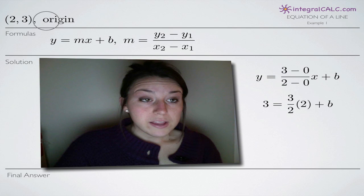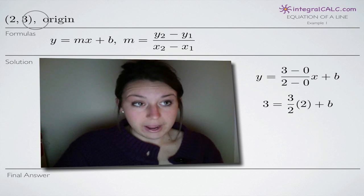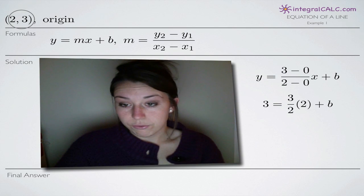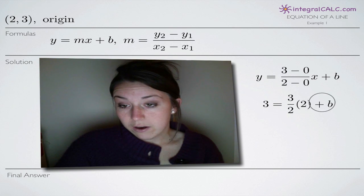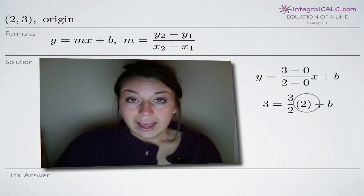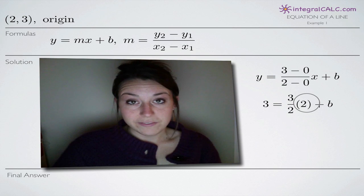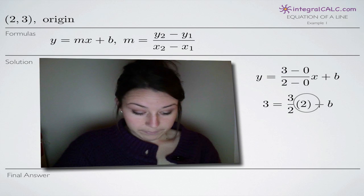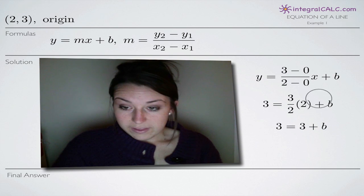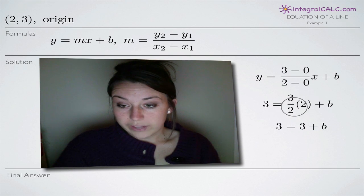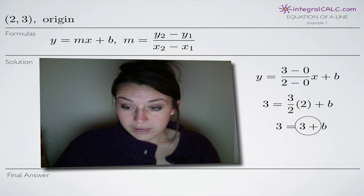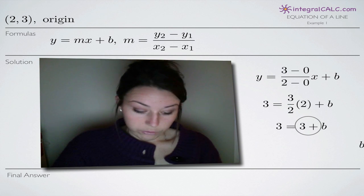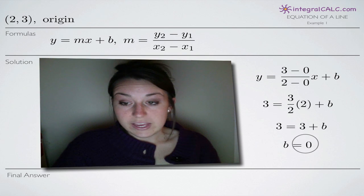That's our slope and we can plug in either one of these points. I'll go ahead and plug in (2,3). So I plug in 3 for y and 2 for x. Now solving this equation for b will give us the last piece of information we need. When we multiply this out, the 2s here will cancel and we'll be left with 3 equals 3 plus b. Subtracting 3 from both sides gives us b equals 0.